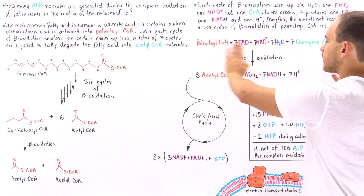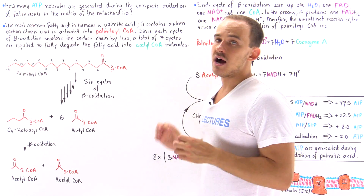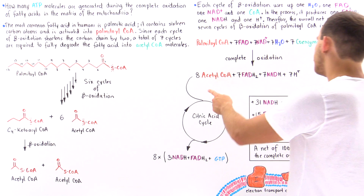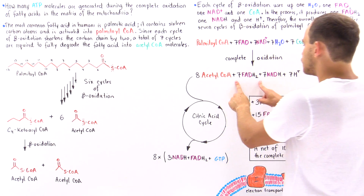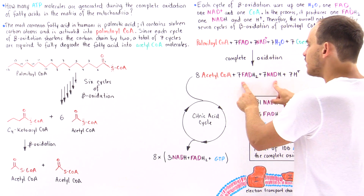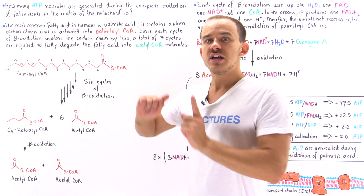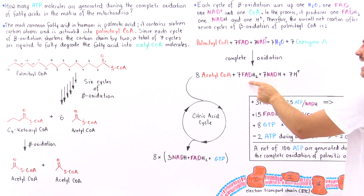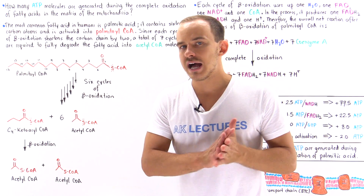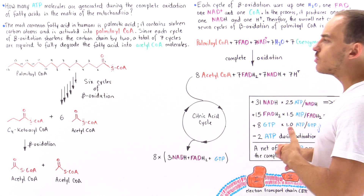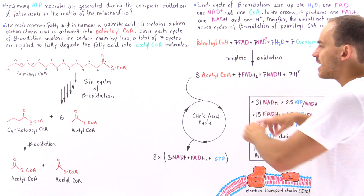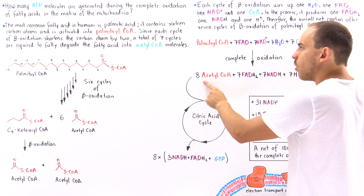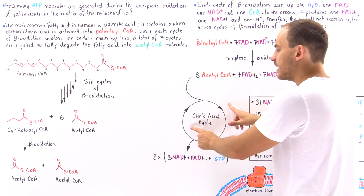That is the total number of molecules formed after seven cycles of beta oxidation. The next question is how many ATP molecules we can form from these products. The FADH2 and NADH molecules move on to the electron transport chain: a single FADH2 generates about 1.5 ATP, while a single NADH generates 2.5 ATP. The acetyl coenzyme A molecules, once formed, are incorporated into the citric acid cycle.